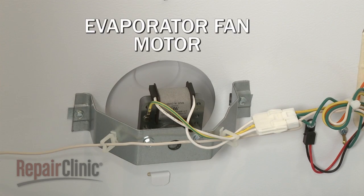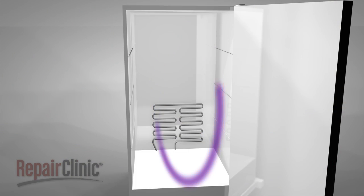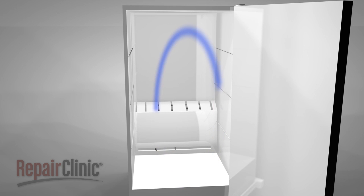At the same time, the evaporator fan draws air through the evaporator coils, which remove the heat from the air. The air then recirculates back into the cooling compartment.